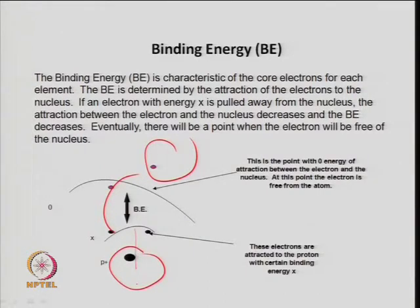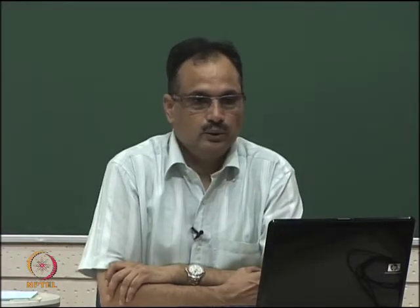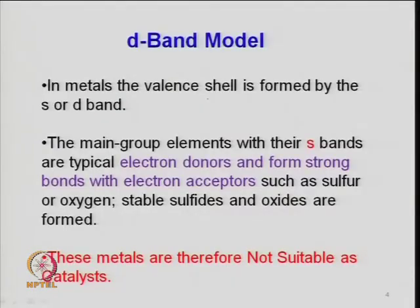Binding energy can be used to determine the total chemical composition or structural property of a metal. The d-band model is the most important property of catalytic materials. PGM group metals — active Group 1B and 2B transition metal elements — are active because they have unpaired d-electrons. The valence cell of metals is formed either by s- or d-bands, and that is the theory of the d-band.